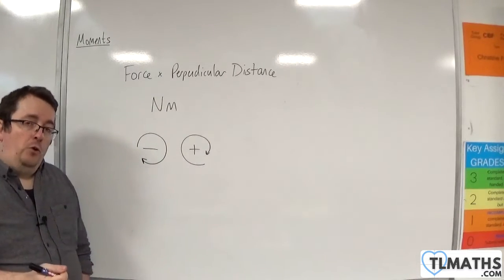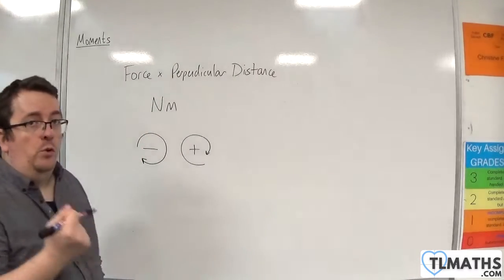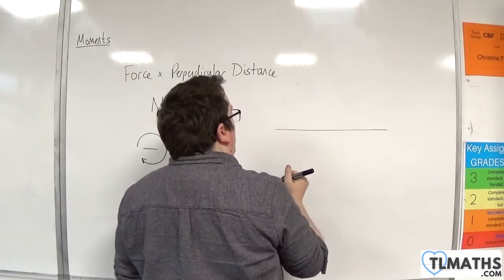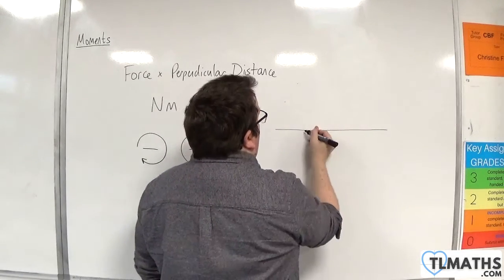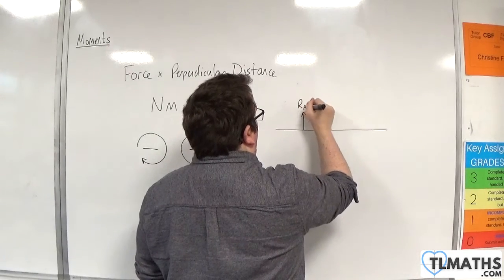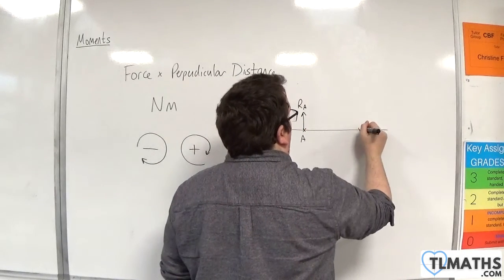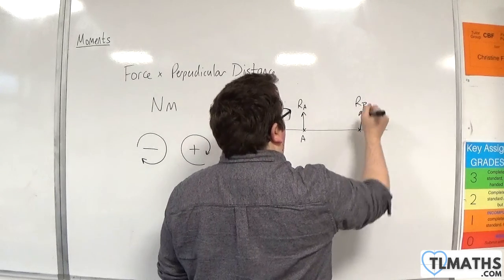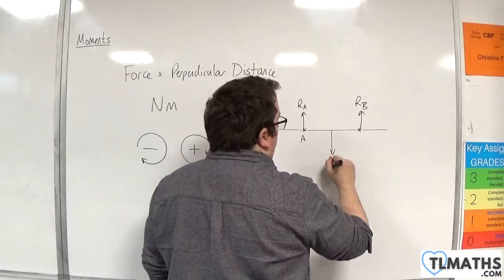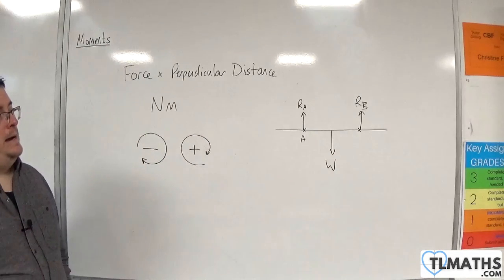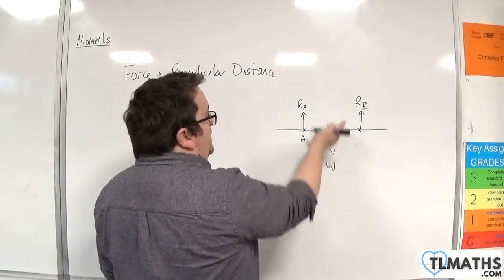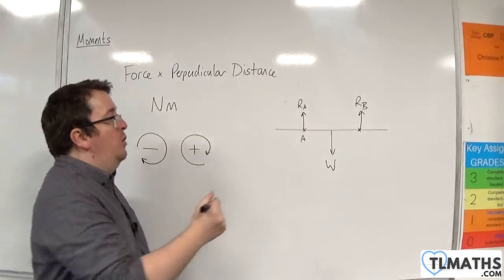Key things to look out for when you're working with moments questions is really two techniques. If we look at a situation where you've got a uniform rod, for example, on two supports. So there'll be a normal reaction force. Let's say that's A. And we'll have another support here, normal reaction force there. We've got the weight of the rod working through. So W.